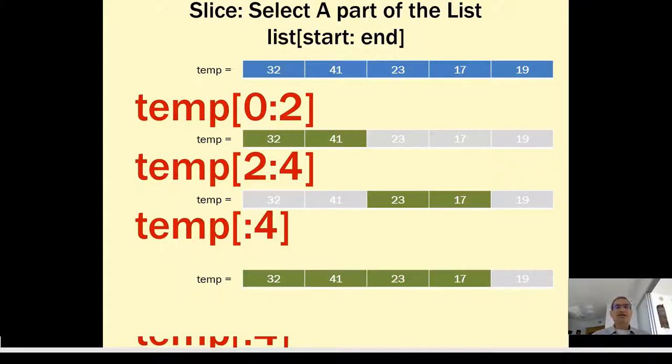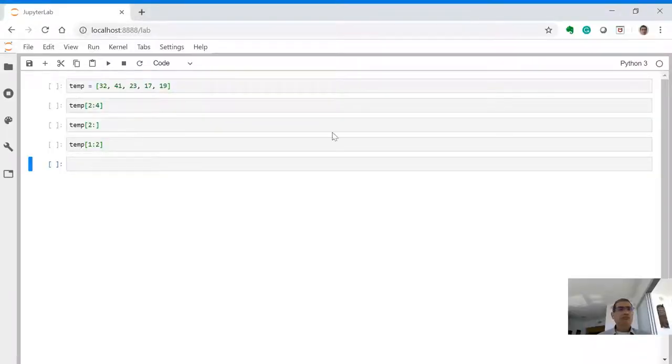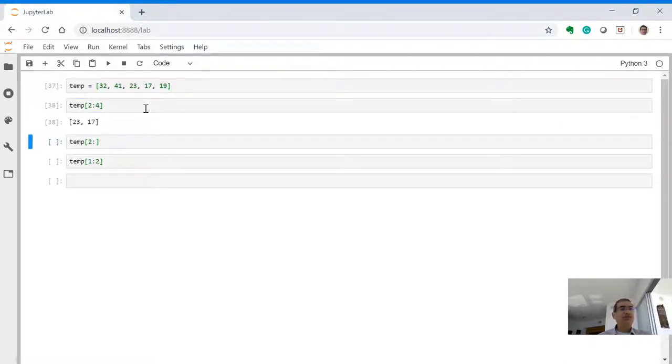Now let us look at that in Python itself. Let us take this list that we have, temp, and then let us try slicing it. Say temp[2:4]. Again, skip 0 and 1, so start from 23, go to 17 but not including 19. It is just the two elements 23 and 17.